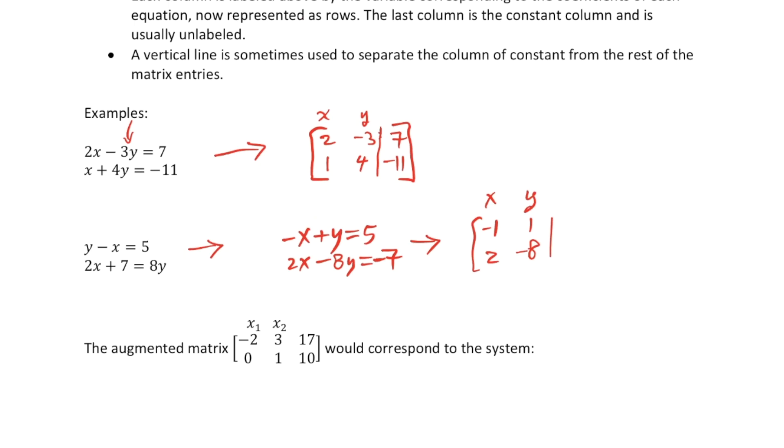1 and negative 8 would correspond to the y coefficients, so I label that column with y. And then maybe I'll have a vertical line or a dashed vertical line. Then I've got the column of constants here at the end. So this would be my augmented matrix for that system.